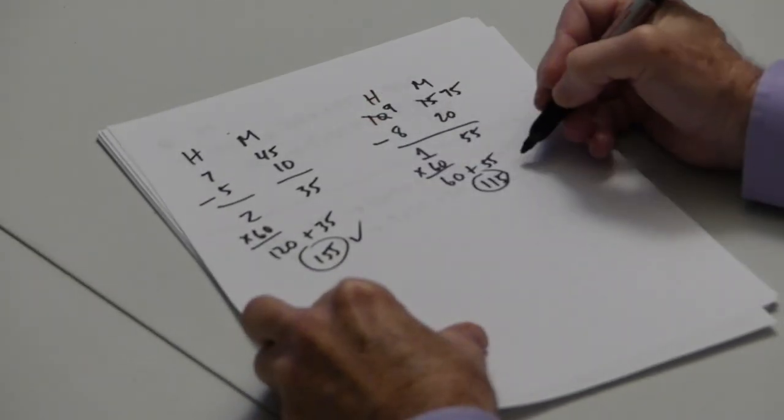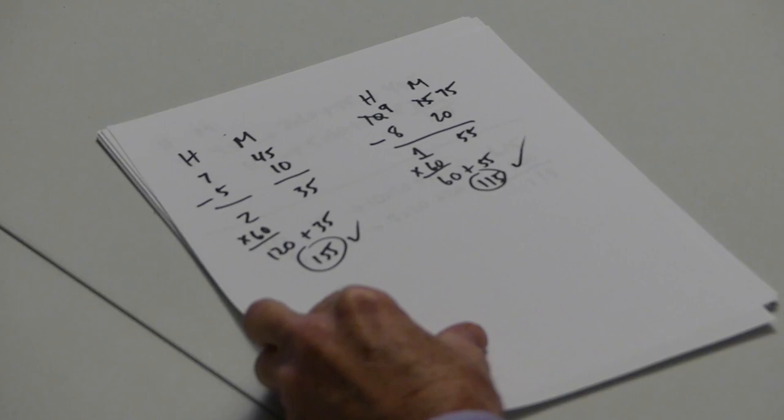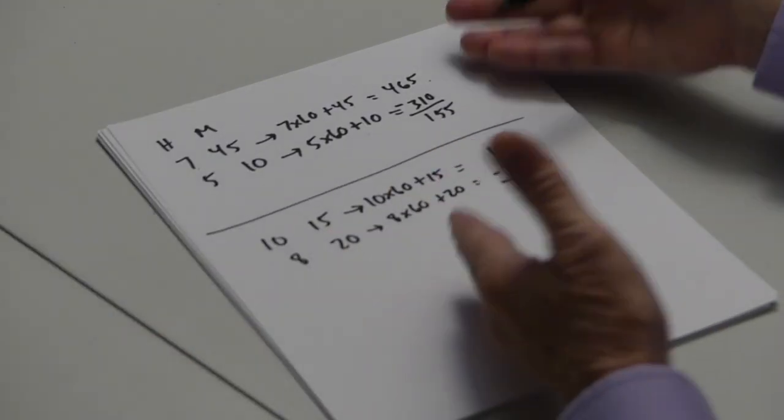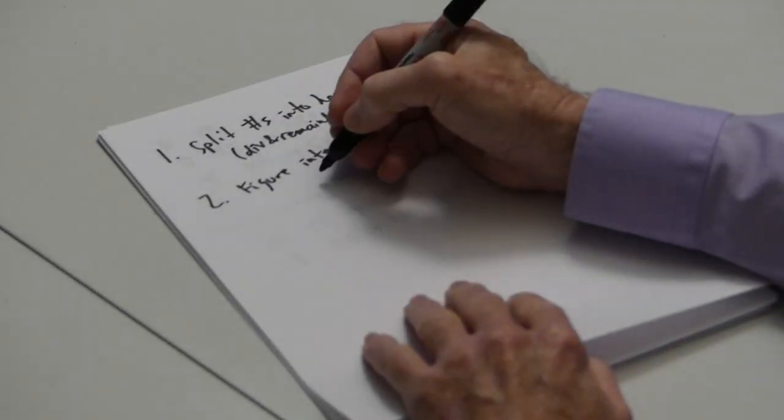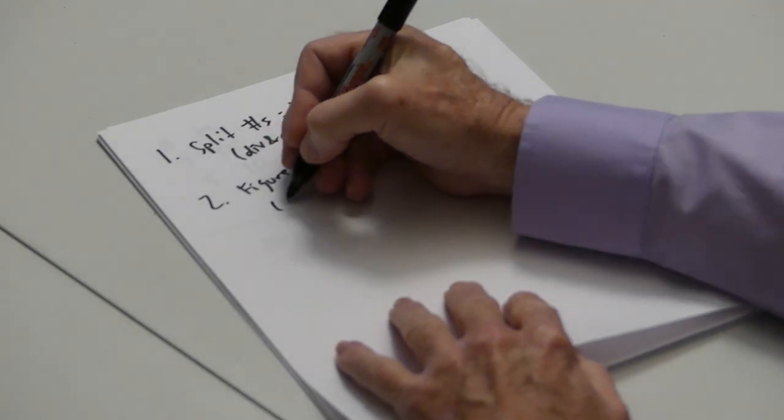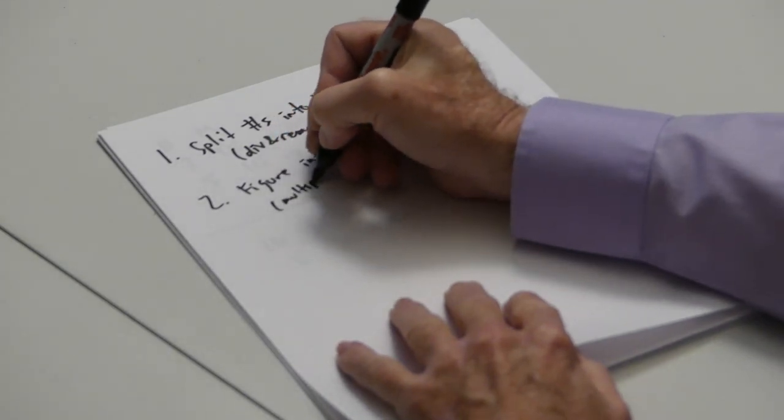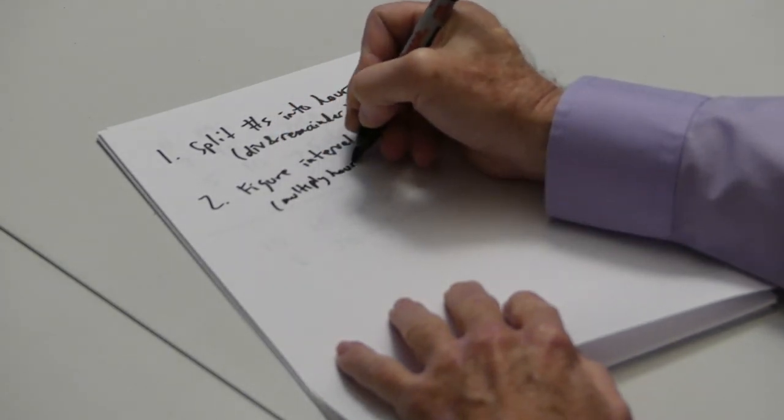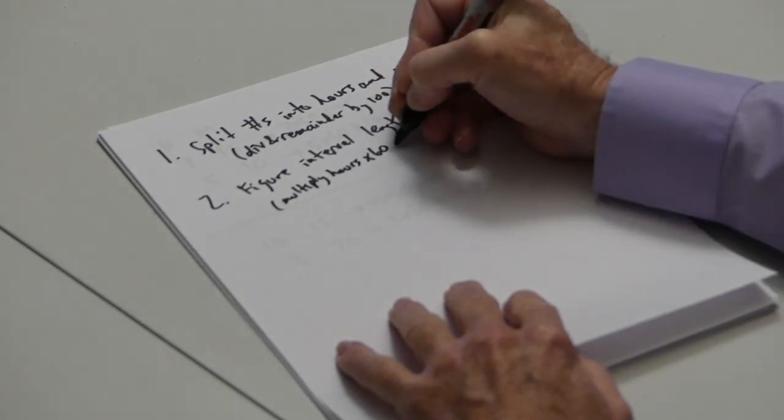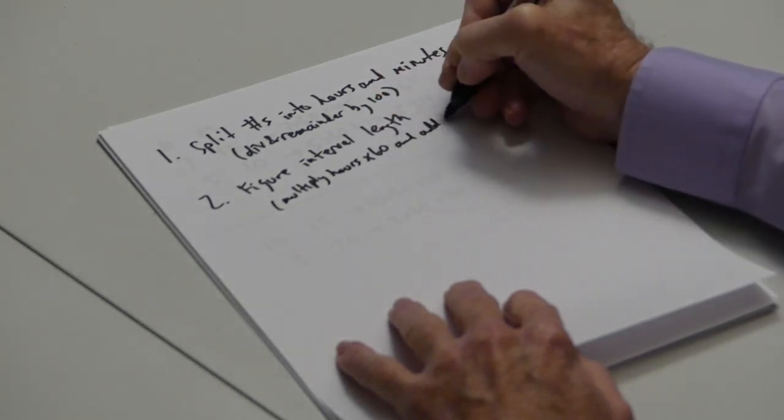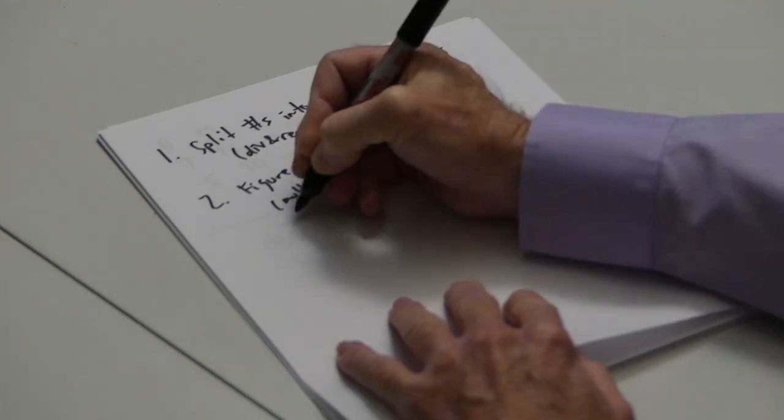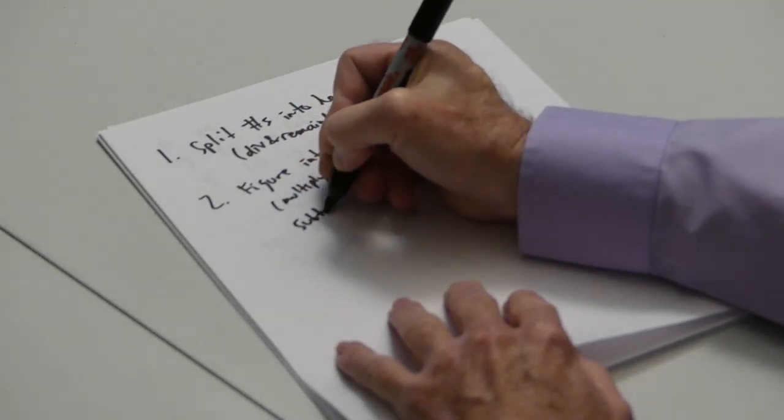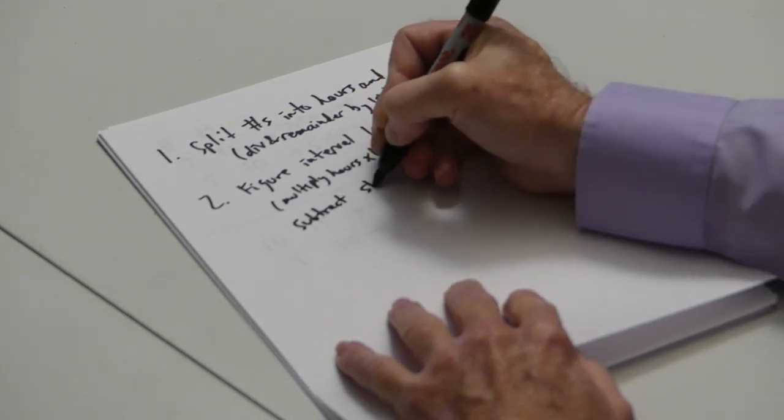And that's exactly the same as the numbers we got when we did it the way we would have done it in school. Except this time, there's no borrowing that has to be done. So we'll add to our list of steps: multiply hours times 60, and add minutes, and then subtract start from end.